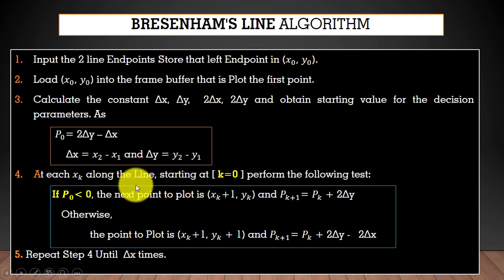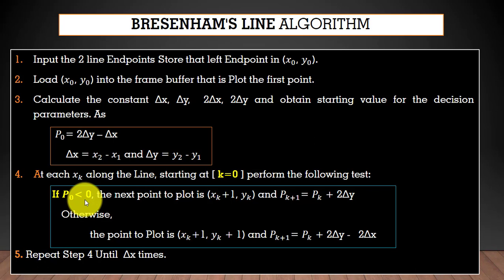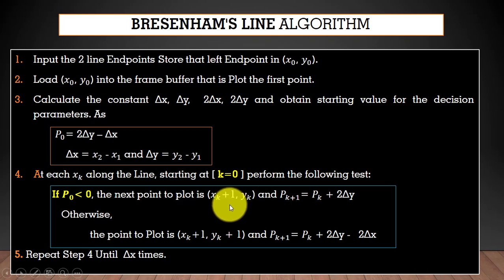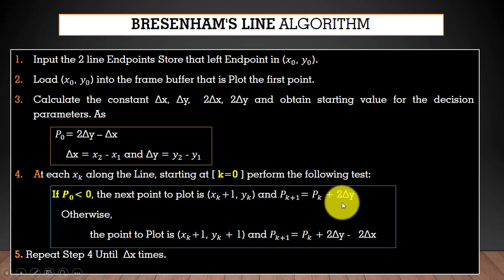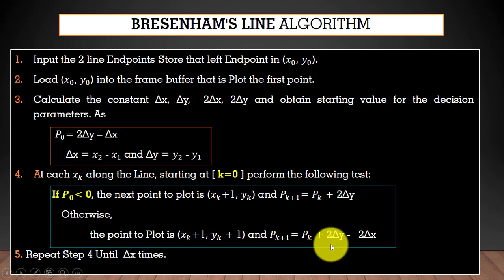In step 4, we check the value of p₀ — whether it is greater than 0, equal to 0, or less than 0. If the value is less than 0, the point is plotted accordingly and we increment the value of p using one equation. Otherwise, we use a different equation to plot the point. We repeat step 4 until Δx times.